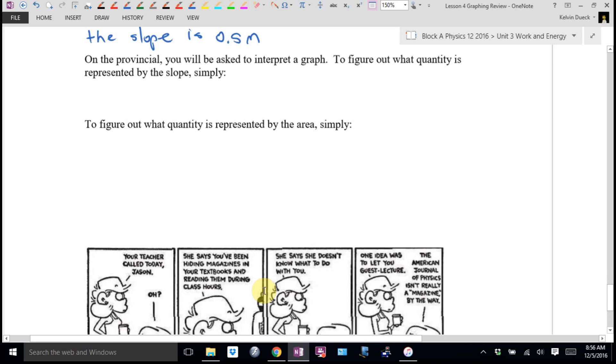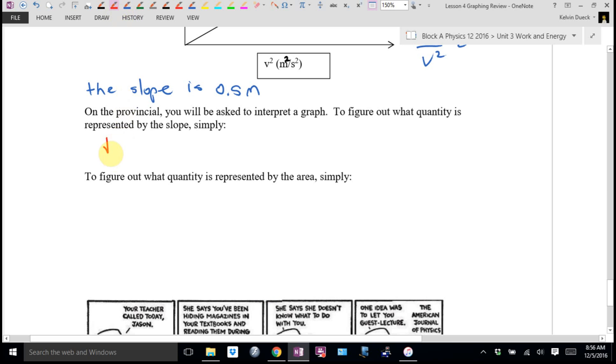So to figure out what quantity is represented by slope, you simply divide the units or the variables. To figure out what quantity is represented by the area, simply multiply the units or the variables. Either or.